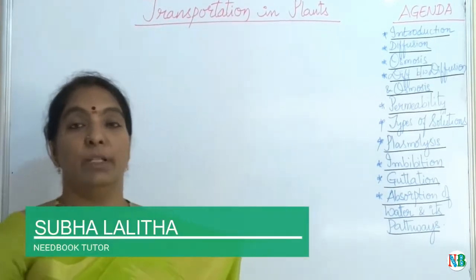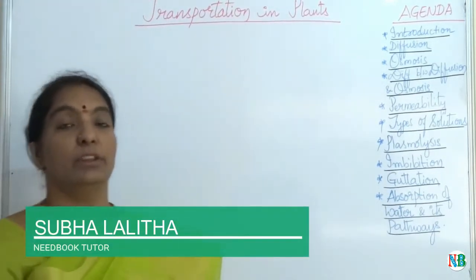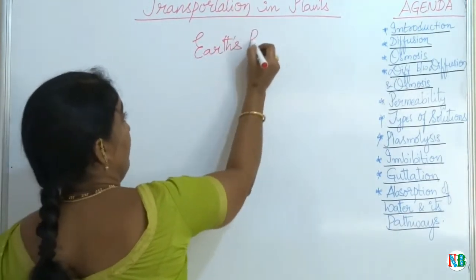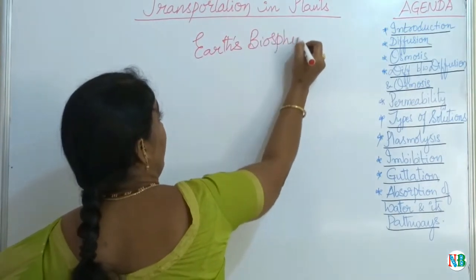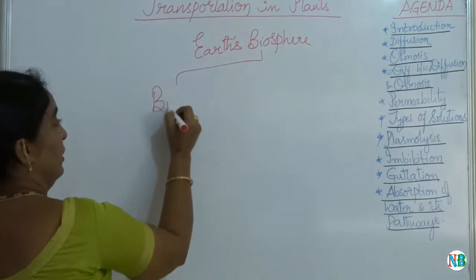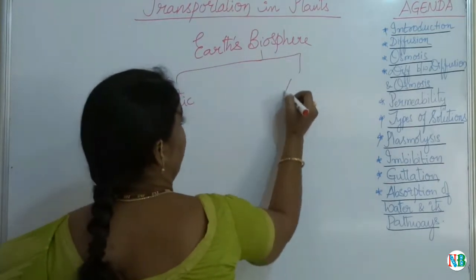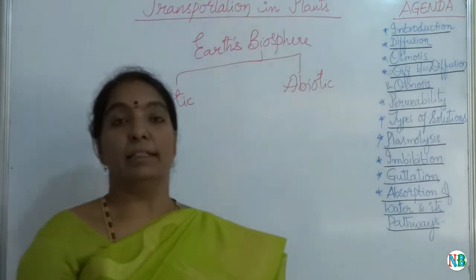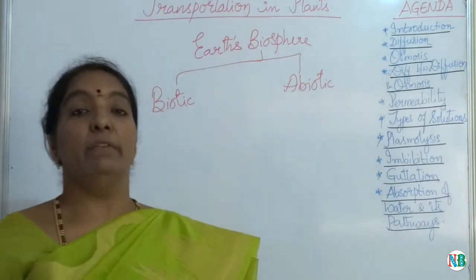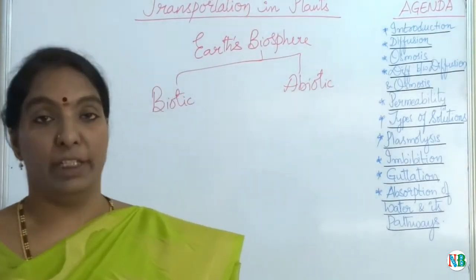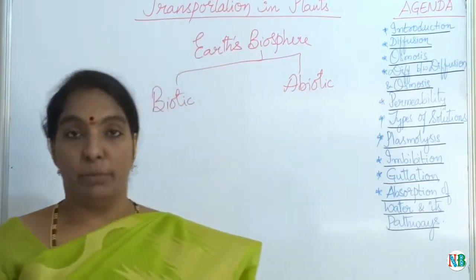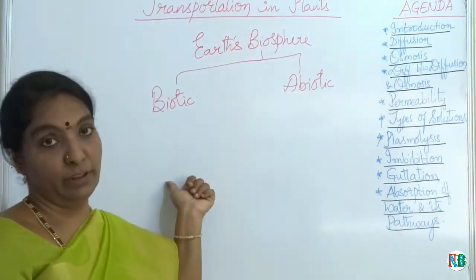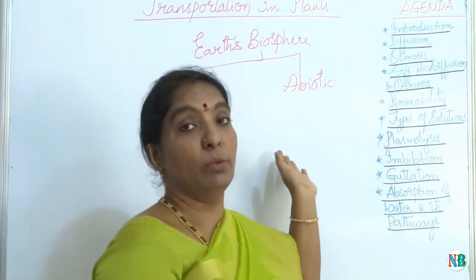Hello students. Today we are going to deal with transportation in plants. Our planet Earth is composed of biotic and abiotic components. Biotic components being the plants, animals and other components. The body weight of biotic components is majorly occupied by water, which accounts to 85% to 95% of their body weight, and water being a biotic component.